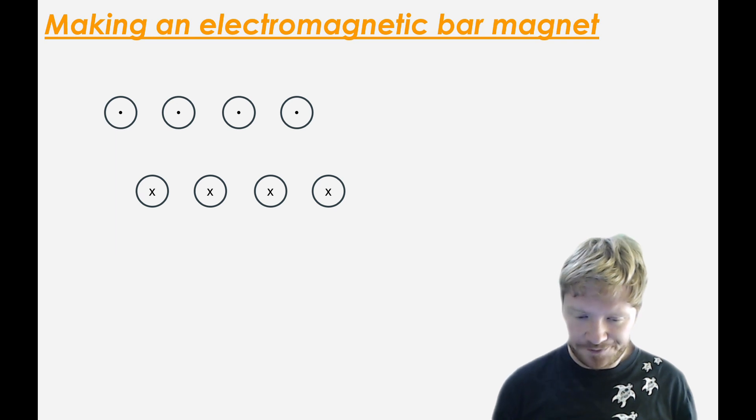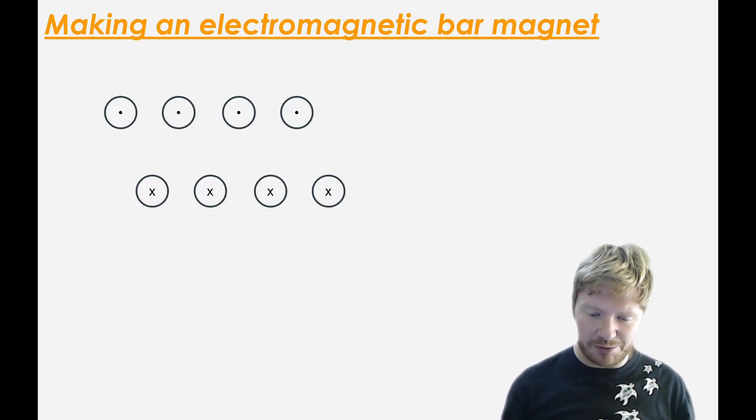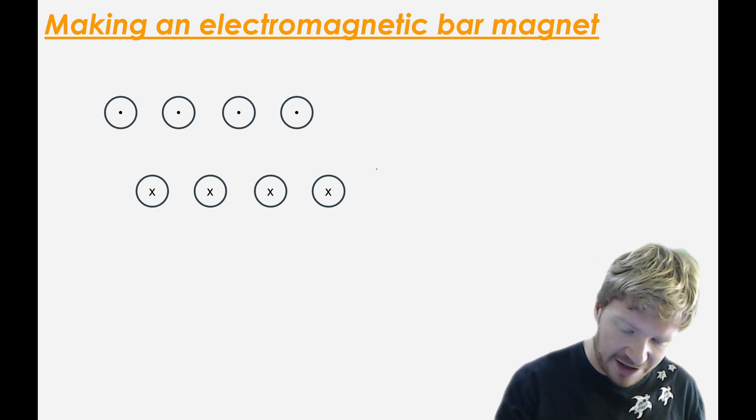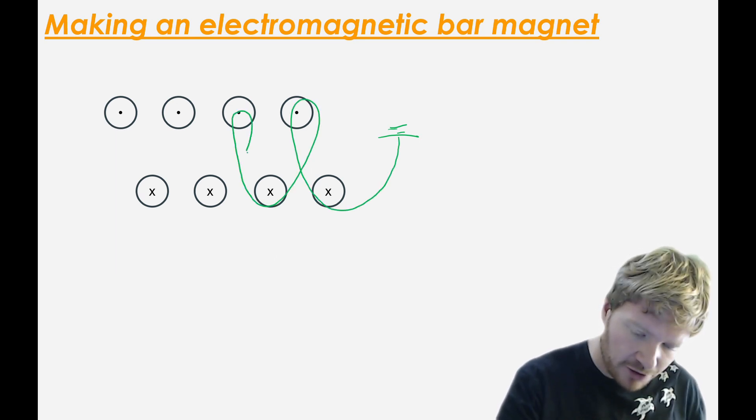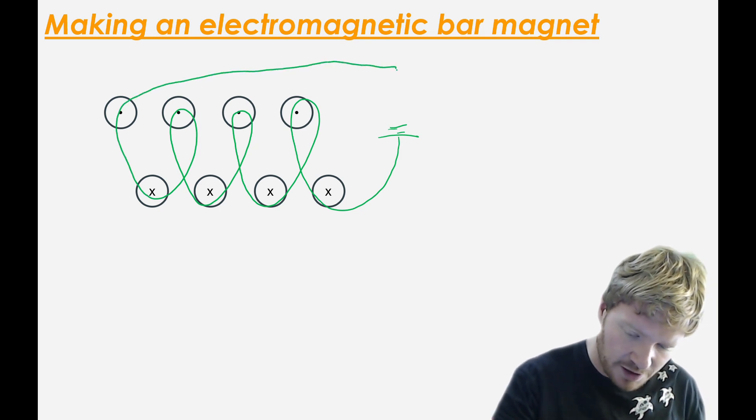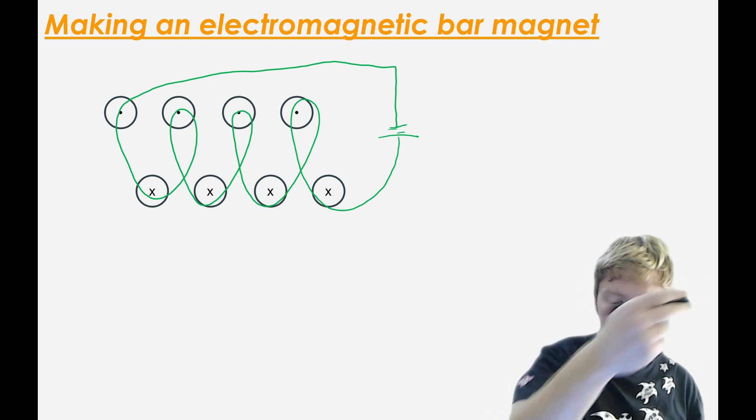Okay, so how is it then that we can make an electromagnet? So what an electromagnet is, is we take a power supply and we pass it so that it goes through a coil of wire. Like that. And then back. So I wrap it around a bunch of times.